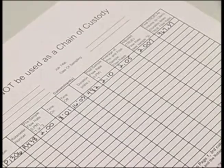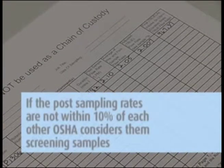If the post sampling rates are not within 10%, OSHA considers the samples screening samples. And if the analytical results show high levels, resampling is recommended.